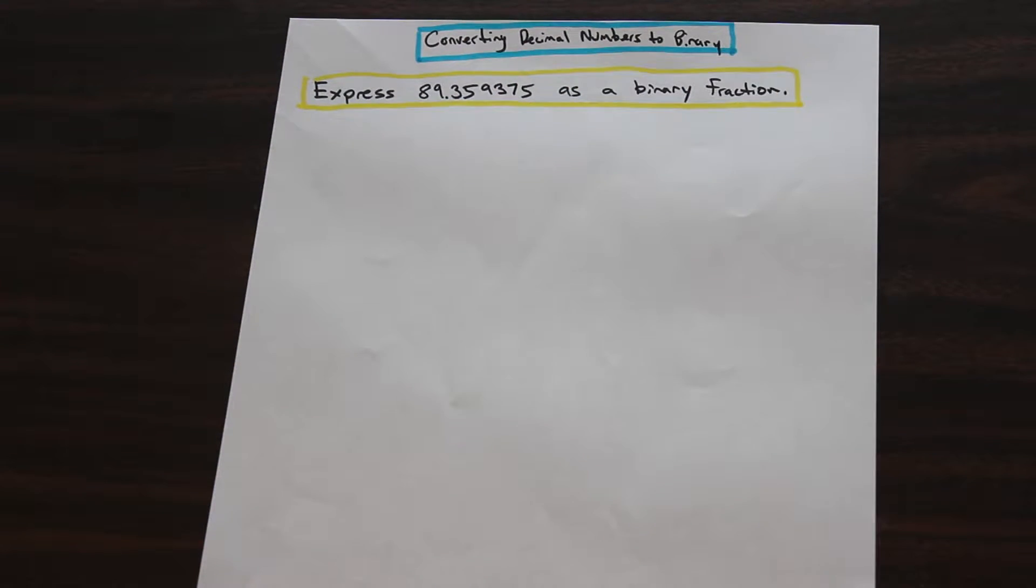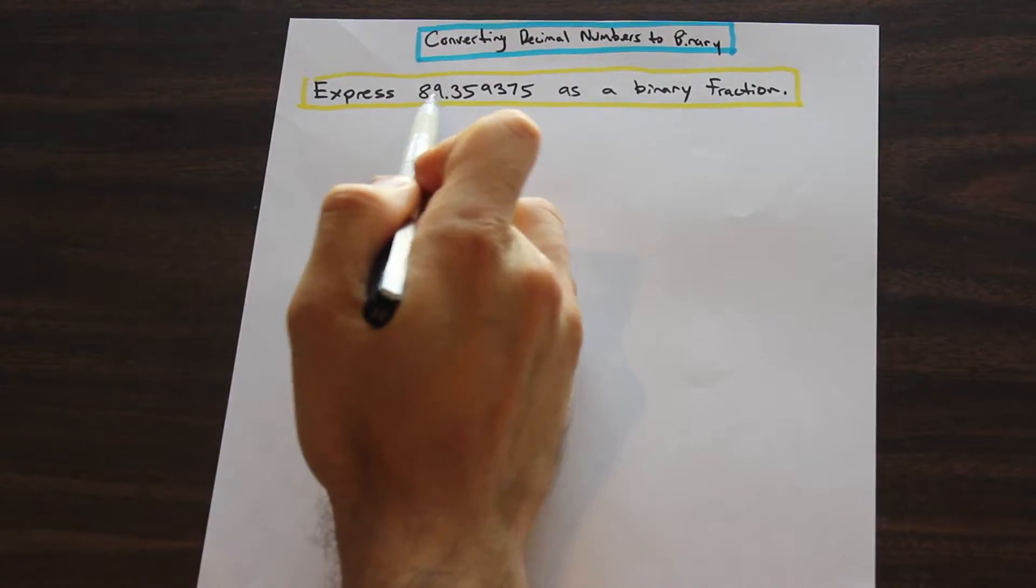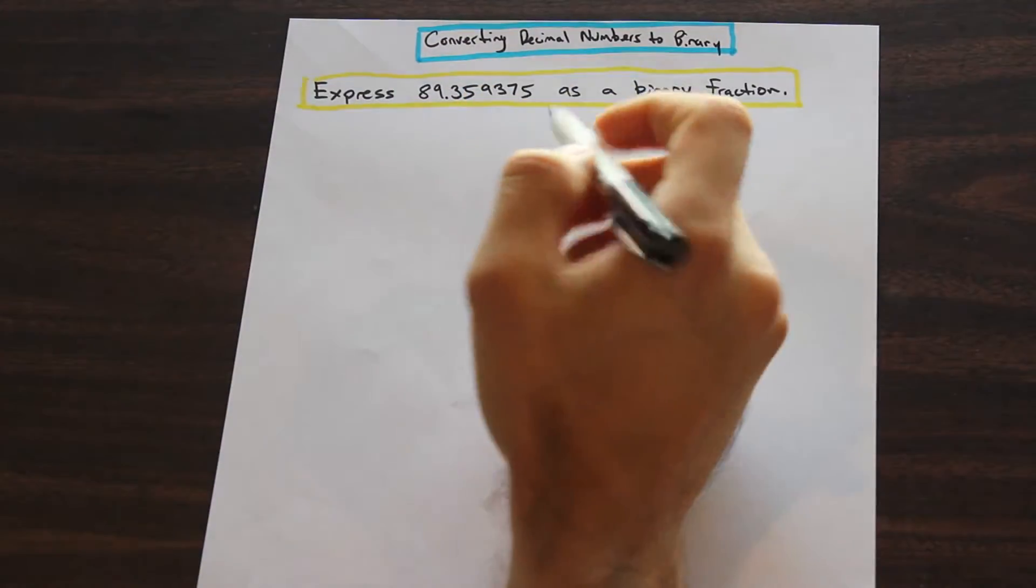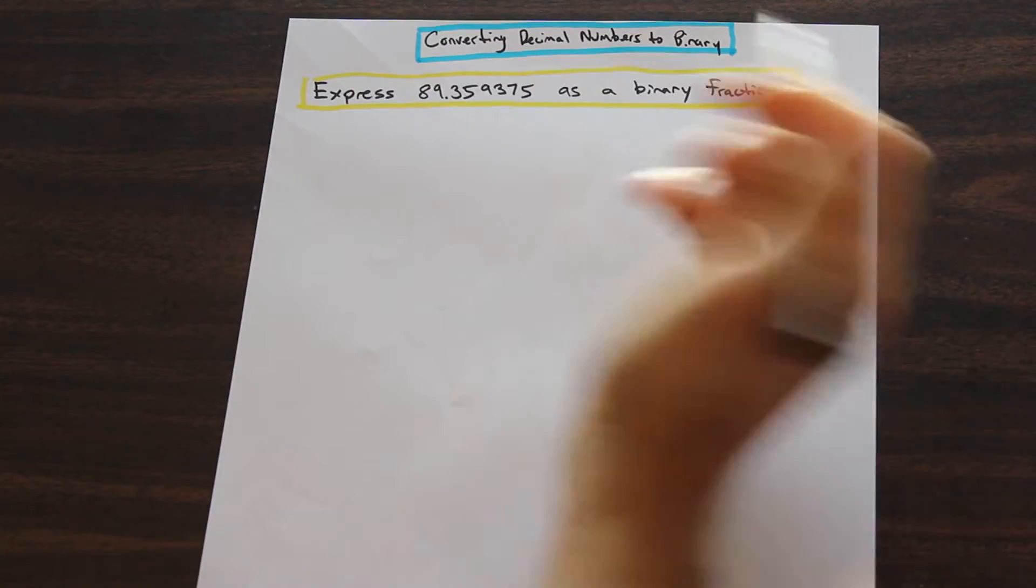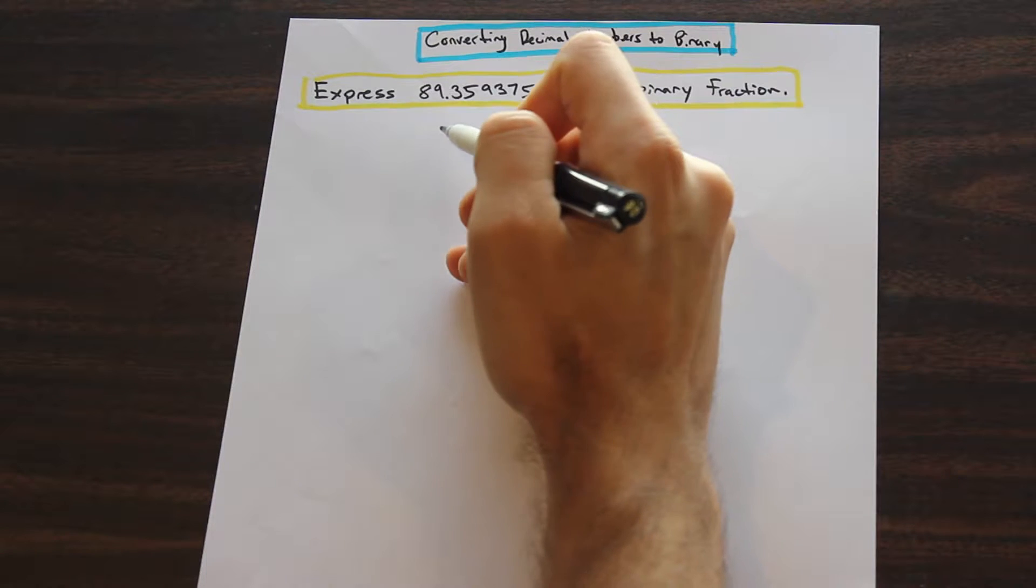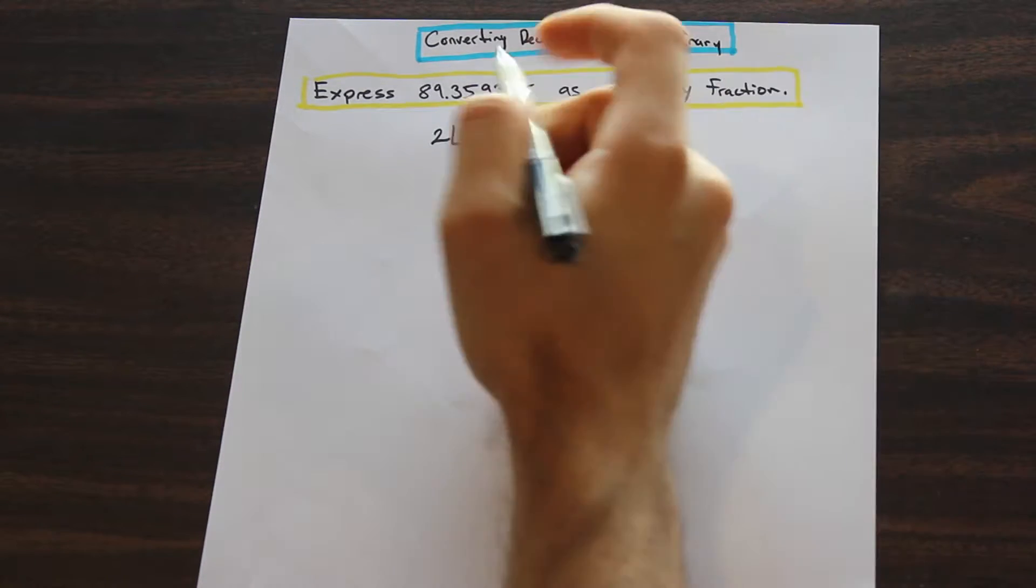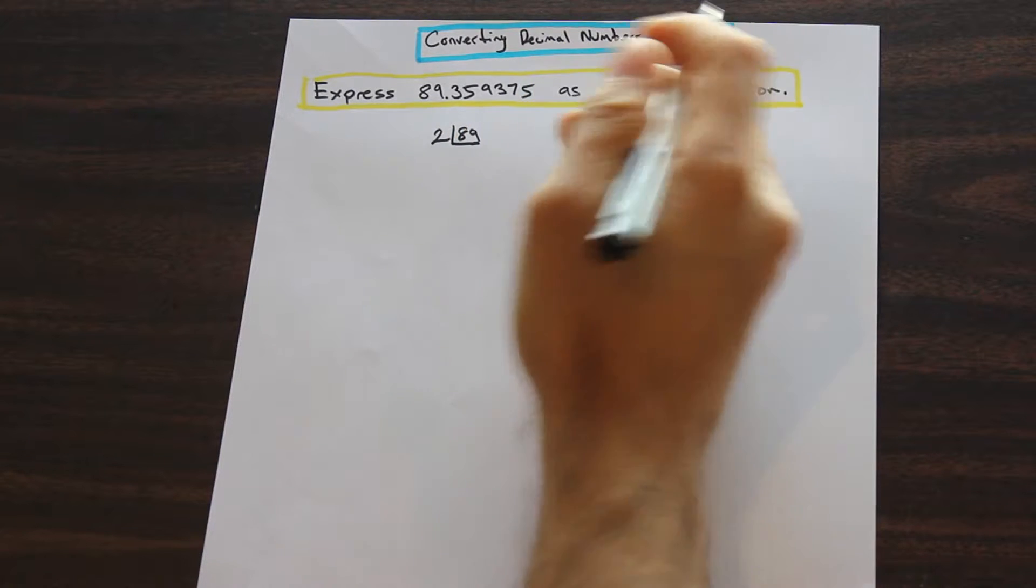It's super simple. You're going to start with the whole number first. Start with the number to the left of the decimal. In this case, it's 89, and we are going to divide that number by 2. So we're going to divide 89 by 2.